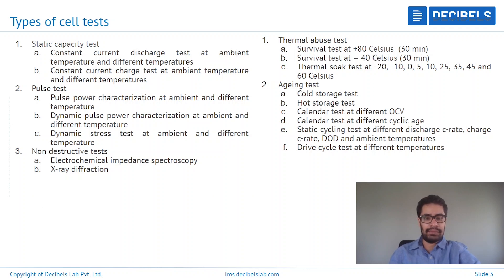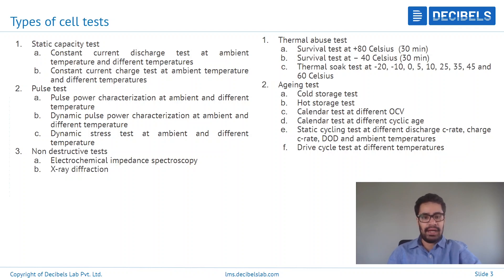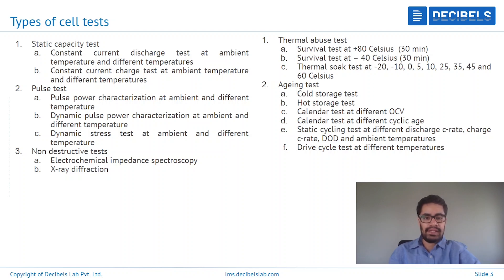What are all the different types of tests that one can perform on a particular cell? Starting with some simple tests — what is called a capacity test or static capacity test, where the cell is subjected to a constant current discharge. This constant current discharge test is performed at ambient temperature and also at different temperatures. As per ISO standards, it is tested not only at ambient (25 degrees Celsius) but also at a variety of temperatures such as minus 20, minus 10, 0, 25, 35, and up to 60 degrees Celsius. The same is done not only for discharge but also for charge, under constant current charge conditions at ambient and different temperatures. By performing this, the available capacity of the cell — both during discharging and charging, at different current rates and ambient temperatures — is understood.